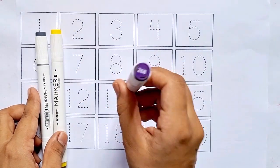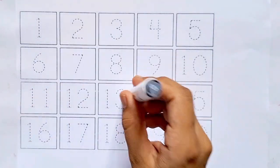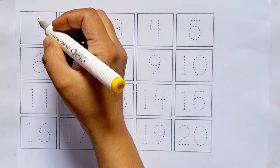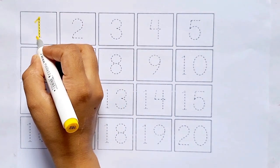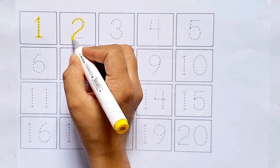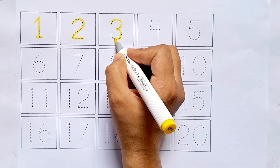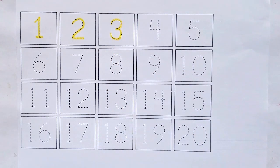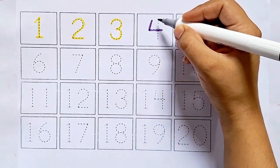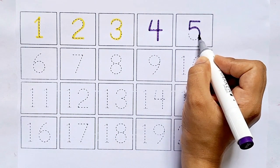One. This is one. Two. This is two. After one comes two. Three. This is three. After two comes three. Four. This is four. After three comes four. Five. This is five. After four comes five.